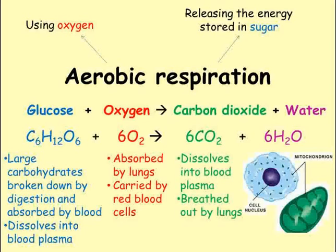Respiration is something that every single cell needs to do to stay alive, so every single cell needs a constant supply of glucose and oxygen and needs to dispose of the carbon dioxide it's producing. In humans, the glucose comes from digestion. Enzymes such as amylase break carbohydrates down into glucose, and these are absorbed and transported by the blood around the body. The glucose is carried dissolved in the blood plasma. Oxygen is absorbed by the red blood cells in the lungs and transported around the body as well. Carbon dioxide from the respiring cells dissolves into the blood plasma and is carried back to the lungs where it's breathed out.